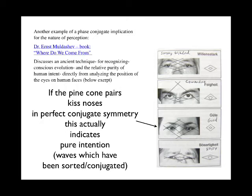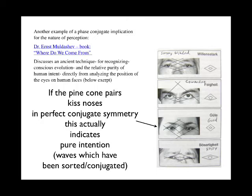Another example from the Russian literature, from Ernest Muldischoff's famous book. The geometry of the positions of the eyes tells you if a person is strong-willed, a coward, has pure intention, or is nasty. You simply draw the orientation of the two pairs of cones and check the symmetry between the two pairs of cones that are the eyes to see if this person has the possibility of pure intention. This is detailed in the Russian literature, and now we know why, because pure intention is literally the sorting into phase discipline which happens in the presence of phase conjugation.